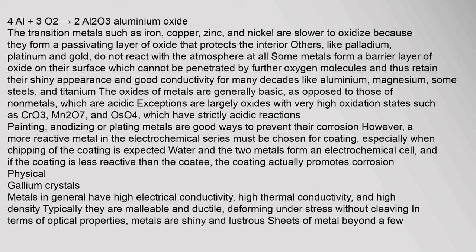Painting, anodizing, or plating metals are good ways to prevent their corrosion. However, a more reactive metal in the electrochemical series must be chosen for coating, especially when chipping is expected — water and the two metals form an electrochemical cell, and if the coating is less reactive than the coated metal, the coating actually promotes corrosion.